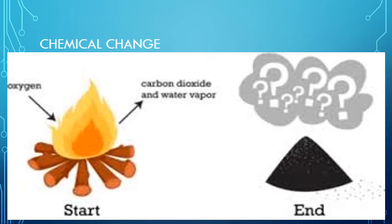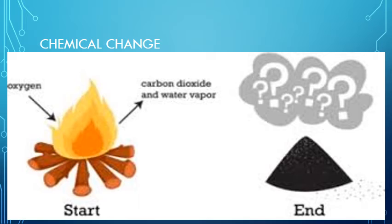Chemical changes are not reversible as a new substance is formed. As you can see in the picture, if we fire the wood it will become ash. Can we get ash back into wood? No. One more thing — if we make paper from wood, we all know that paper is made of wood. Is it possible to get back the wood from the paper? No, because the paper is a new substance.